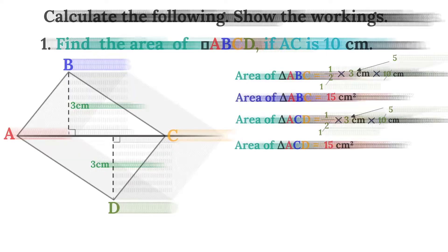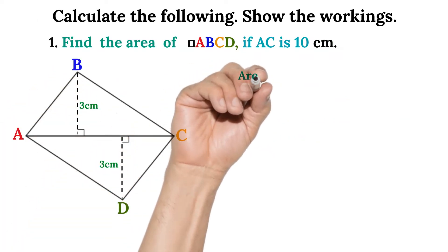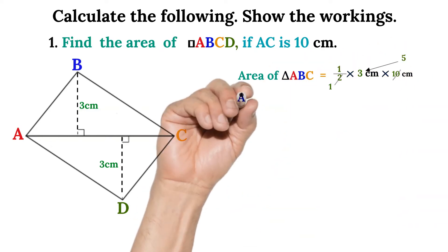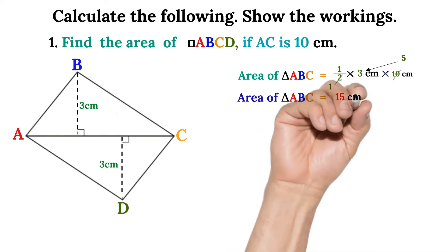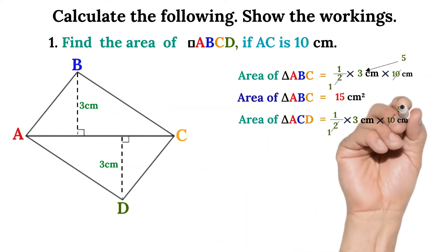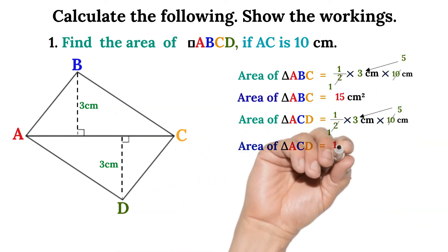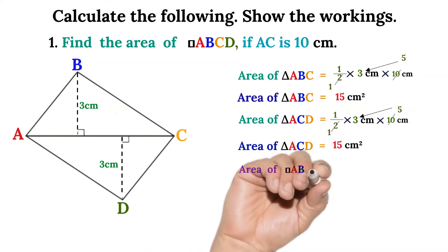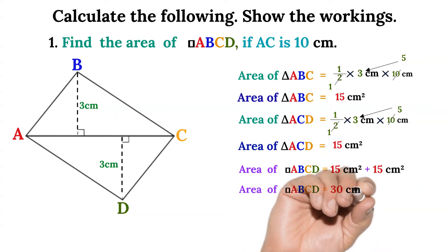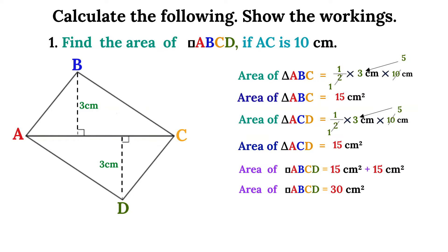Now that we have the area of the two triangles, we can get the area of the rectangle by adding the two triangles together. Triangle ACD gave us 15 centimeters squared. Area of rectangle ABCD equals 15 centimeters squared plus 15 centimeters squared, and that will be 30 centimeters squared. That is how we calculate the area of rectangle ABCD.